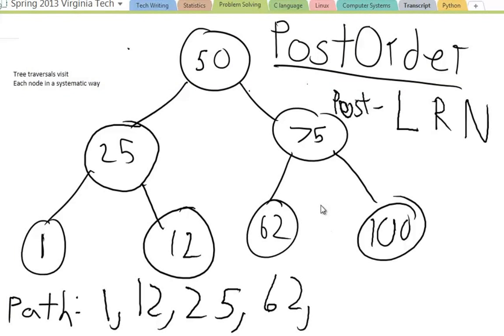Now I go, I look at 62. Can I go left? No. Can I go right? No. I've already visited the node, so I go back up to 75. At 75 I've already been left, but I can go right, so I go right to 100. And 100, there is nowhere to go except visit the node as you've seen before, so I go to 100. Then I go back up to 75. I've already visited the left and right subtrees, but I haven't visited yet, so the only option left is to visit the node. So I go to 75.